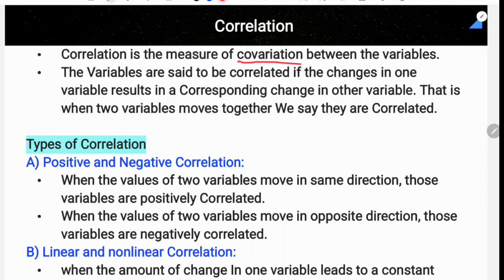Co-variation means when there is a change in one variable, there is a simultaneous change in the other variable. So correlation measures the co-variation between variables. The variables are said to be co-related if the change in one variable results in a corresponding change in the other variable. When two variables move together, we say they are co-related.